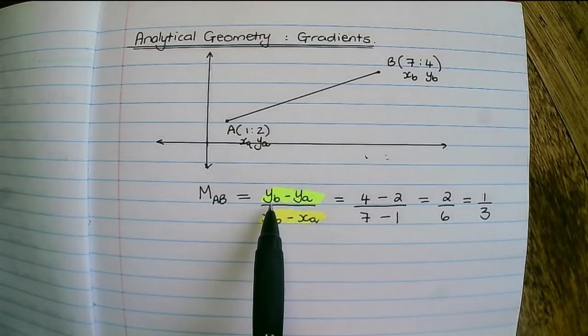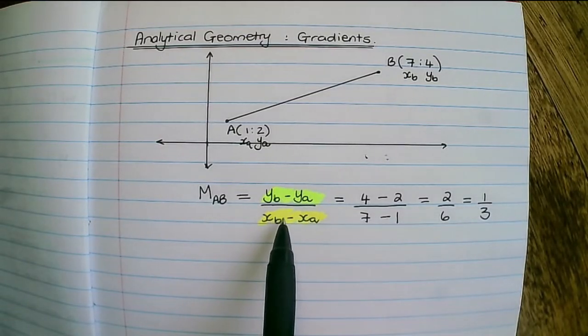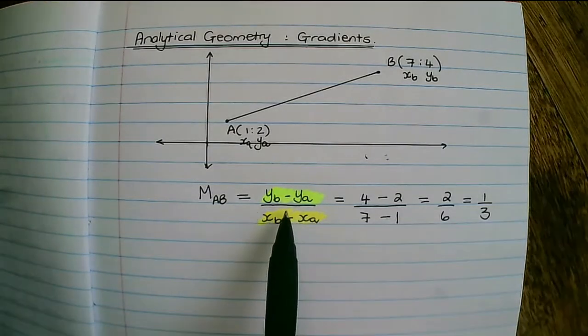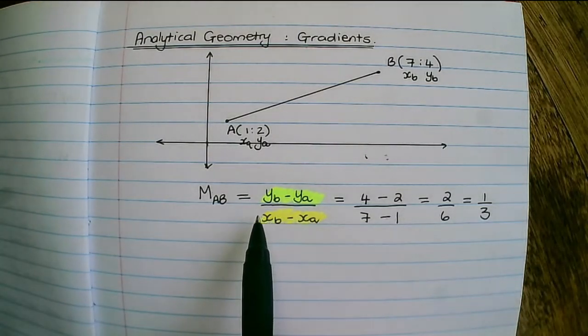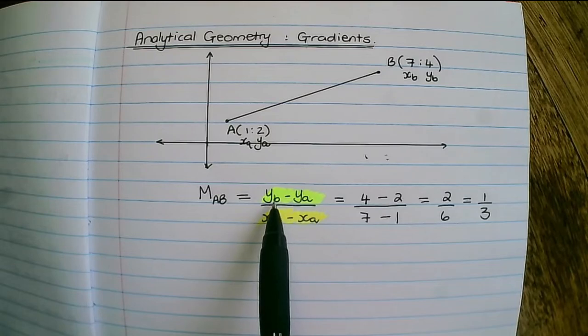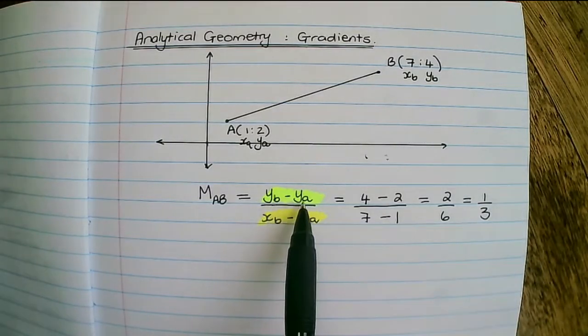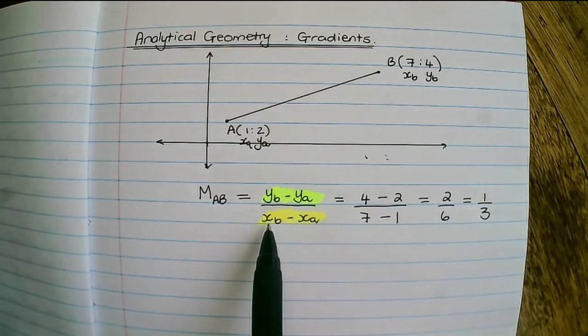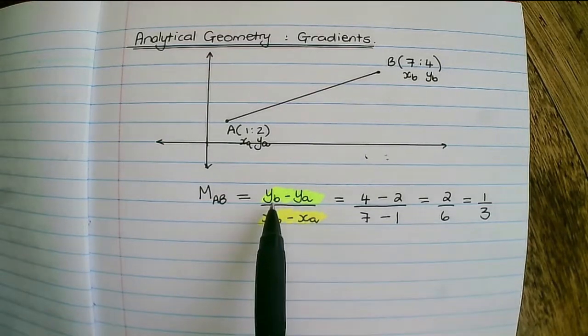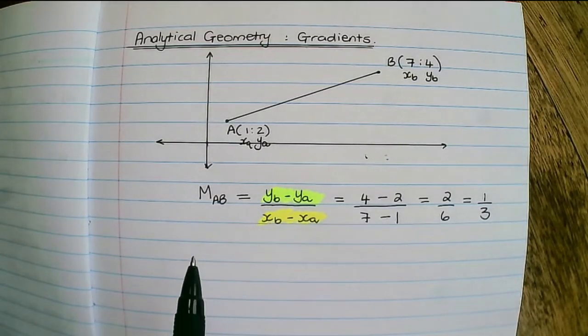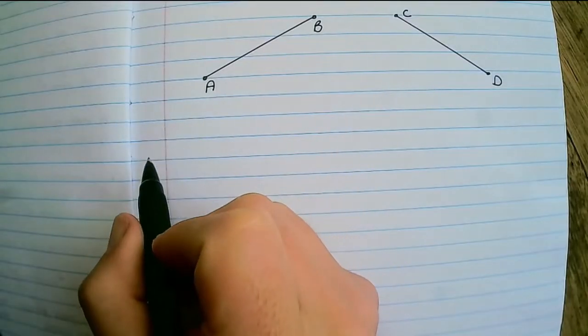in the numerator, then I must also place the x value of B first. So the difference of y's are always at the top and the difference of x's are always at the bottom. If I place coordinate B first, then I need to place it first at the bottom as well. Now let us compare